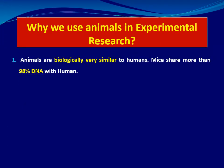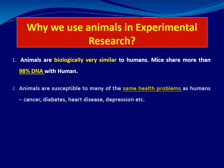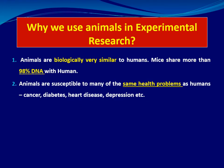Animals are biologically very similar to humans. Mice share more than 98% of human DNA — that's why we use mice and rats. Animals are susceptible to many of the same health problems as humans, such as cancer, diabetes, hypertension, heart diseases, and depression. We can induce all these models in rats and study the effect of drugs and the pathophysiology of these diseases.